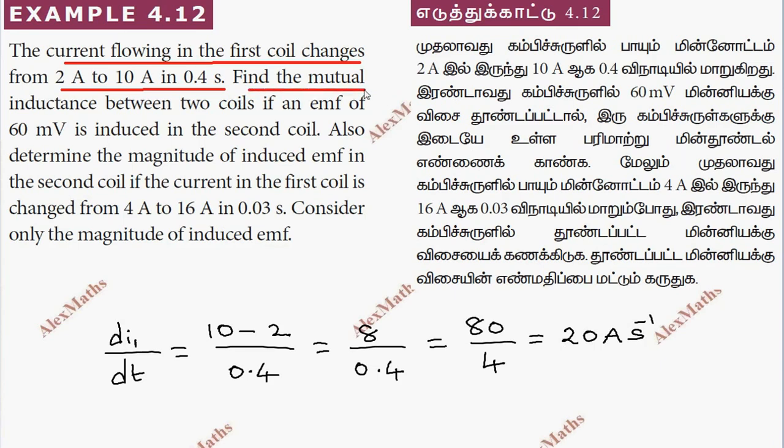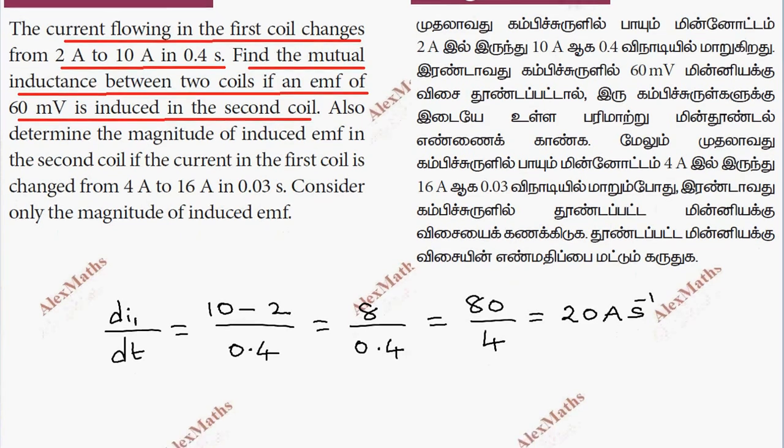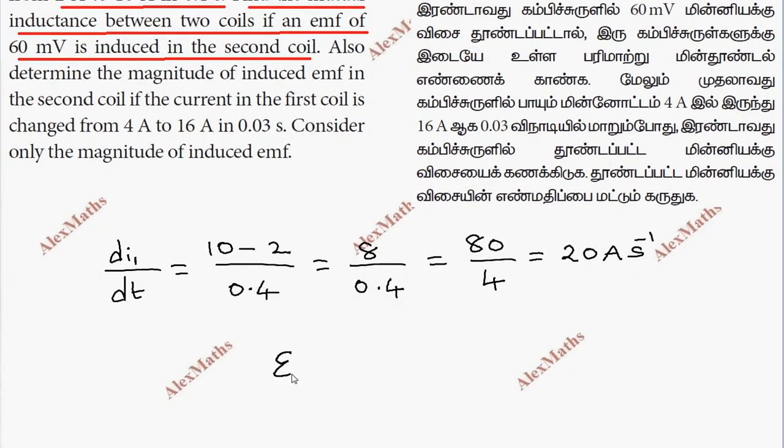Find the mutual inductance that will induce the EMF 60 millivolts in the second coil. So, second coil induced EMF, epsilon 2, is minus M into di1 by dt.